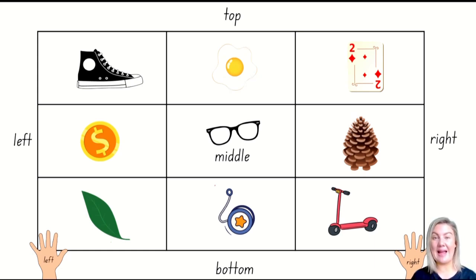I see something at the top in the middle. What is it? It's an egg. Have a look at this grid. It's made up of three rows and three columns. I'm going to think of the first row at the top being the top. I'm going to think of the second row as the middle, and I'm going to think of the last row as the bottom.